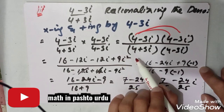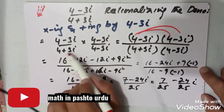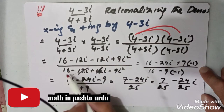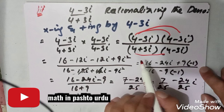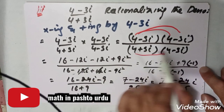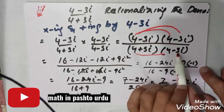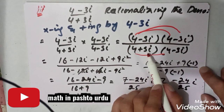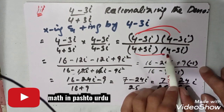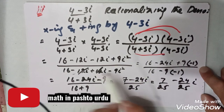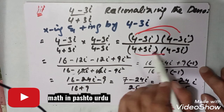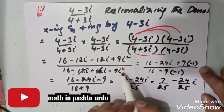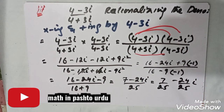In the denominator, (4 plus 3 iota) multiplied by (4 minus 3 iota): 4 times 4 gives 16, 4 times minus 3 iota gives minus 12 iota, 3 iota times 4 gives plus 12 iota, and plus 3 iota times minus 3 iota gives minus 9 iota squared. Since iota squared equals minus 1, this becomes minus 9 times minus 1, which is plus 9.